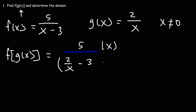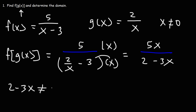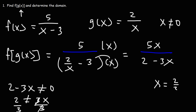We multiply the top and the bottom by x to get a different format. So we get 5x over 2 minus 3x. Now we have a new denominator. This part cannot equal 0, so 2 minus 3x can't equal 0. Adding 3x to both sides, 2 cannot equal 3x. Dividing by 3, x cannot equal 2 over 3.